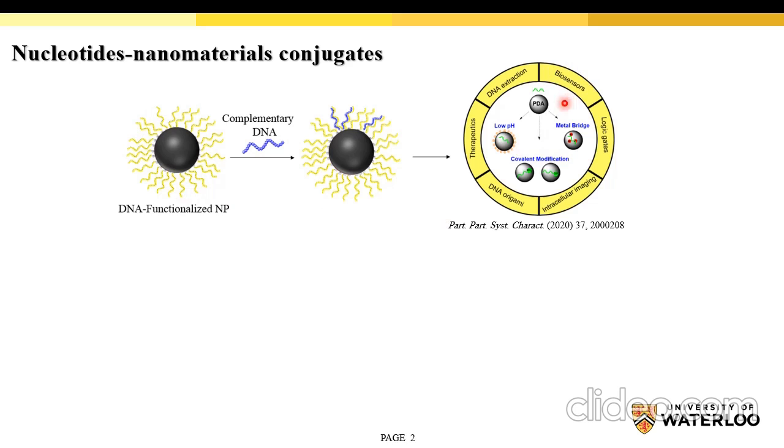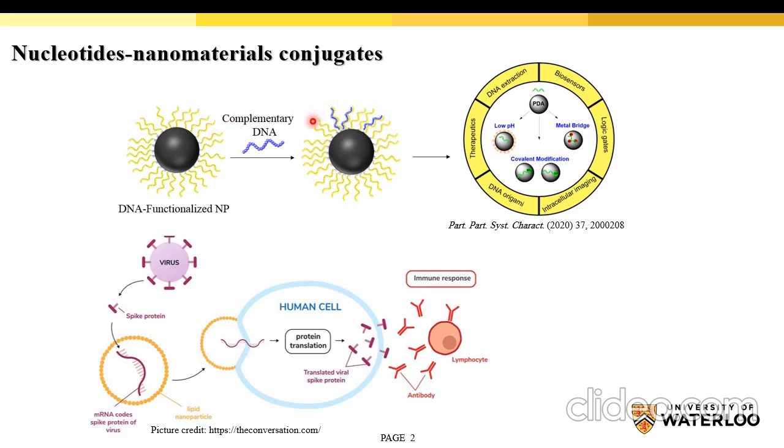This is mainly based on their extraordinary selectivity to their complementary strand. A perfect example of nucleotide-nanomaterial conjugates, which are well known these days, are the COVID-19 mRNA vaccines, in which mRNA, the nucleotide, is coupled with a lipid nanomaterial coating.